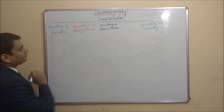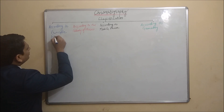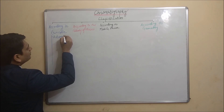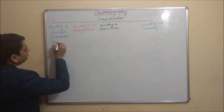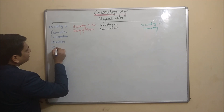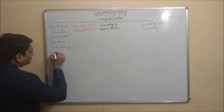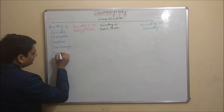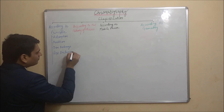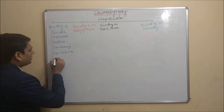According to principle, chromatography is classified into five types: first is adsorption, second is partition, third is ion exchange, fourth is size exclusion, and last one is affinity.